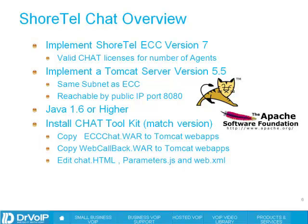In the distribution software for the ECC, you will find a chat toolkit. If you're bringing this up for the first time it's a non-issue, but as you do software upgrades you need to remember that the chat function itself will necessarily be upgraded. You will take the chat toolkit — make sure it matches the version. In that chat toolkit you're going to find a file called ECCChat.WAR — that's three C's — and there's also a demonstration of the callback function in a file called WebCallback.WAR. You will take these two files from the chat toolkit and copy them to the WebApps folder in your Tomcat.